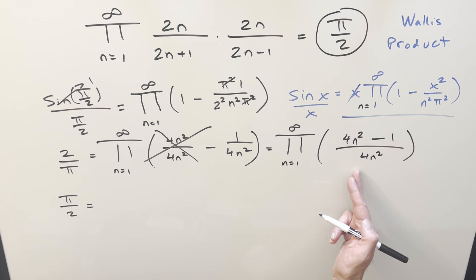But if you think about just multiplying all these terms, then we can just flip each one. So what's going to happen, we have now the product, the numerator becomes 4 n squared over 4 n squared minus 1.